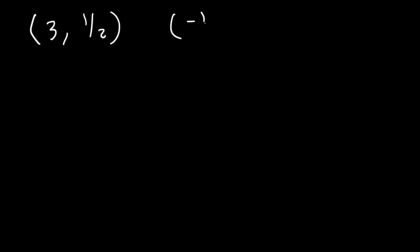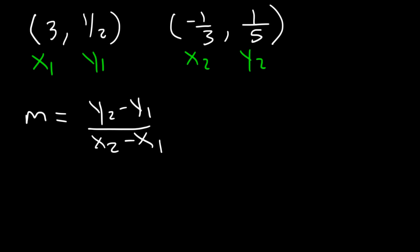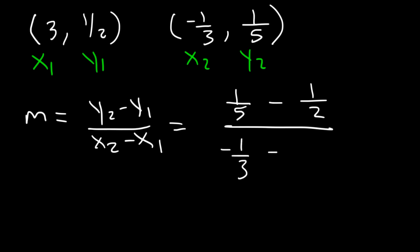Sometimes you may have a point that contains a fraction. How would you find the slope between two such points? So let's say this is x1 and y1, and this is x2 and y2. m is the change in y divided by the change in x — basically the rise divided by the run. y2 is 1/5, y1 is 1/2, x2 is negative 1/3, and x1 is 3. To simplify this complex fraction, the best method is to clear away all fractions. Looking at the denominators, we have 5, 2, and 3.